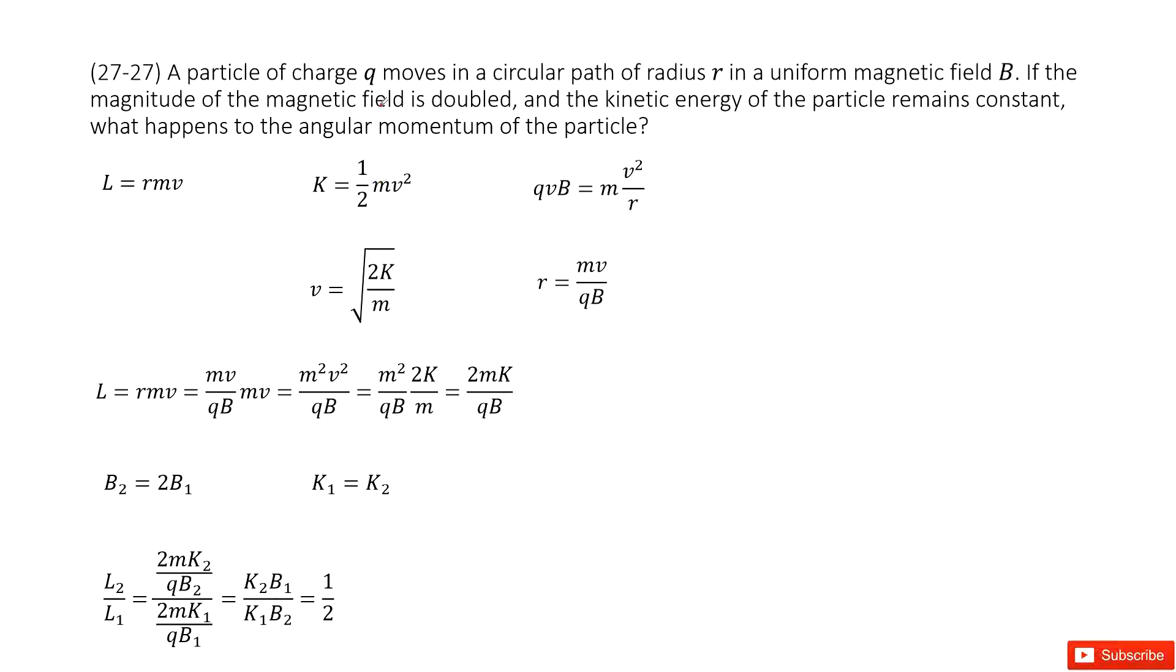So there we have charged particles moving in the magnetic field in circular motion. And then the radius is R, magnetic field is B.